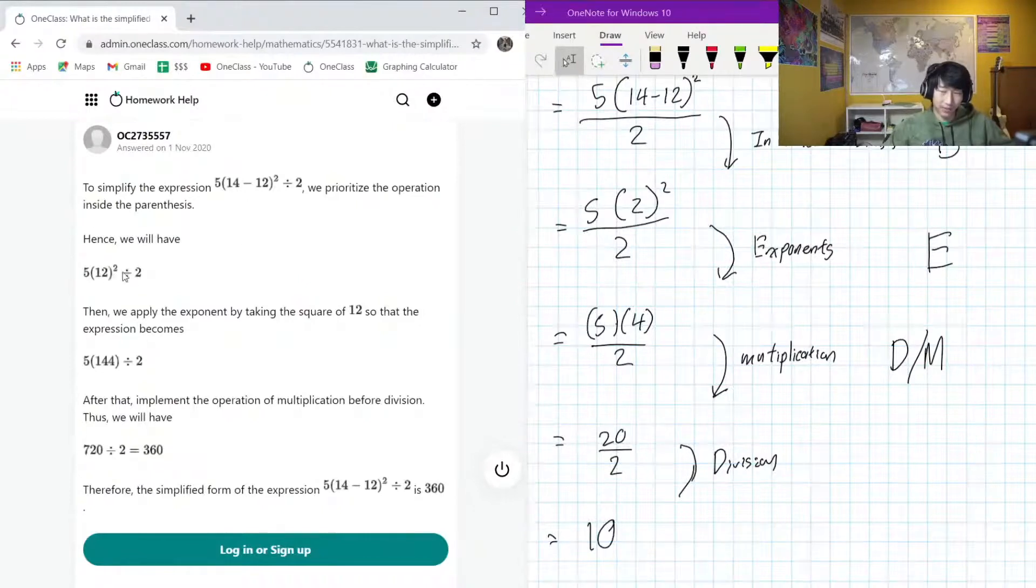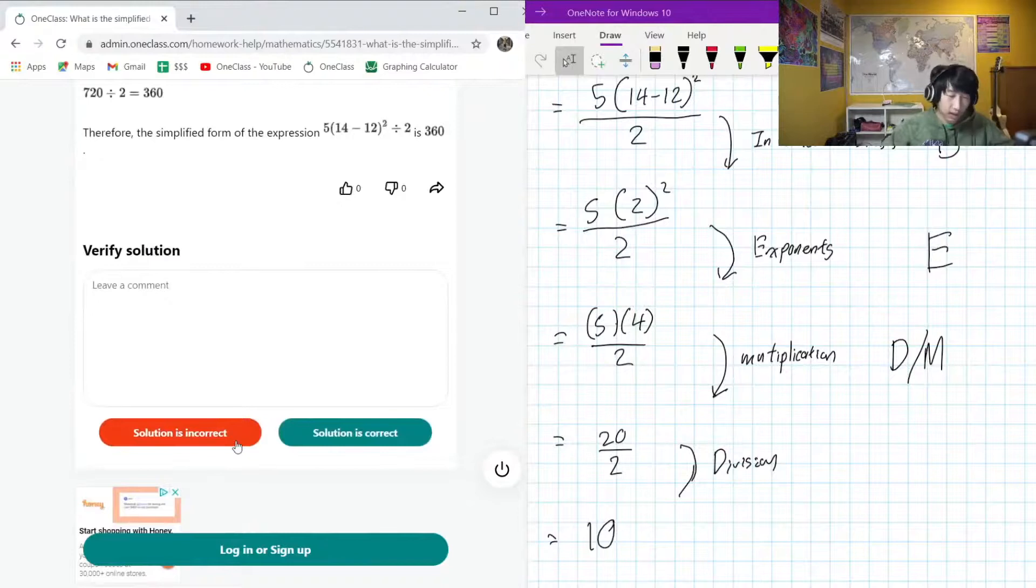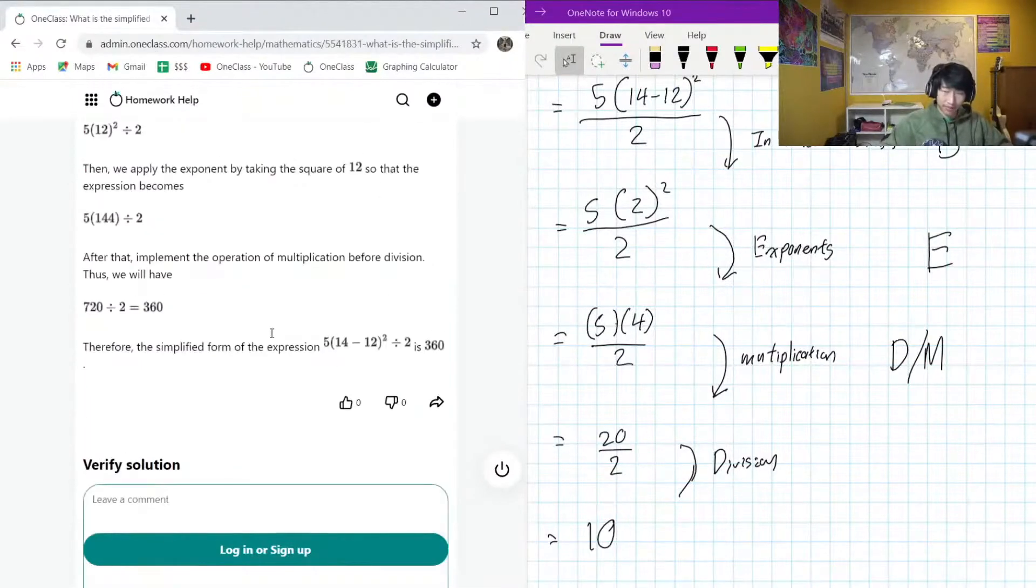It was just calculated wrong, but these things happen. I've made mistakes, sometimes even Isaac Newton made some mistakes, even Einstein made some mistakes. So making mistakes does not make you silly; repeating the mistakes makes you silly. In the brackets, 14 minus 12 is not 12.